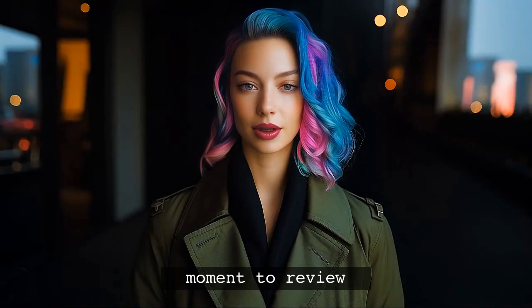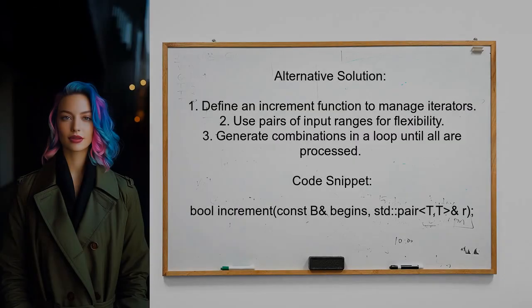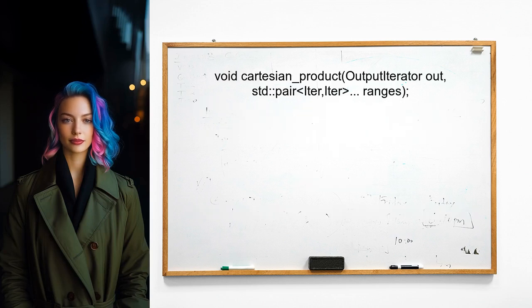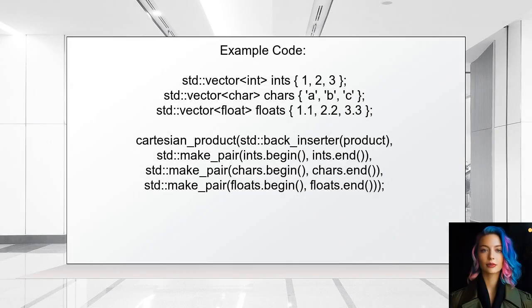Another user's alternative solution involves a function that accepts output iterators and pairs of input ranges. The user defines an increment function to handle iteration through the ranges. This function checks if the current iterator has reached the end and resets it if necessary, allowing all combinations to be generated. The code demonstrates using vectors of different types — integers, characters, and floats — to create a Cartesian product, storing results in a vector of a custom struct, showcasing the versatility of the approach.